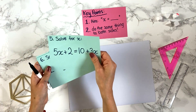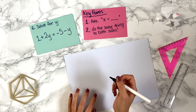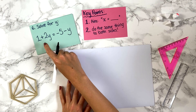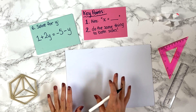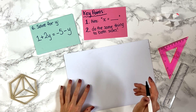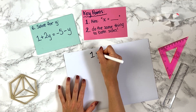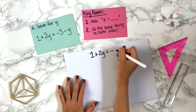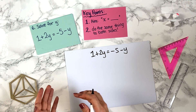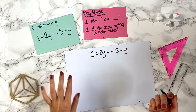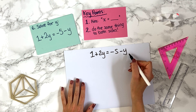Question six: solve for y, 1 plus 2y equals minus 5 minus y. The fact that it says y instead of x doesn't matter — we do the same thing, just with y as the symbol. We want y equals something. Let's bring all the y's to the left-hand side by getting rid of the y on the right. Here we have minus y, so to get rid of it we add y to both sides.